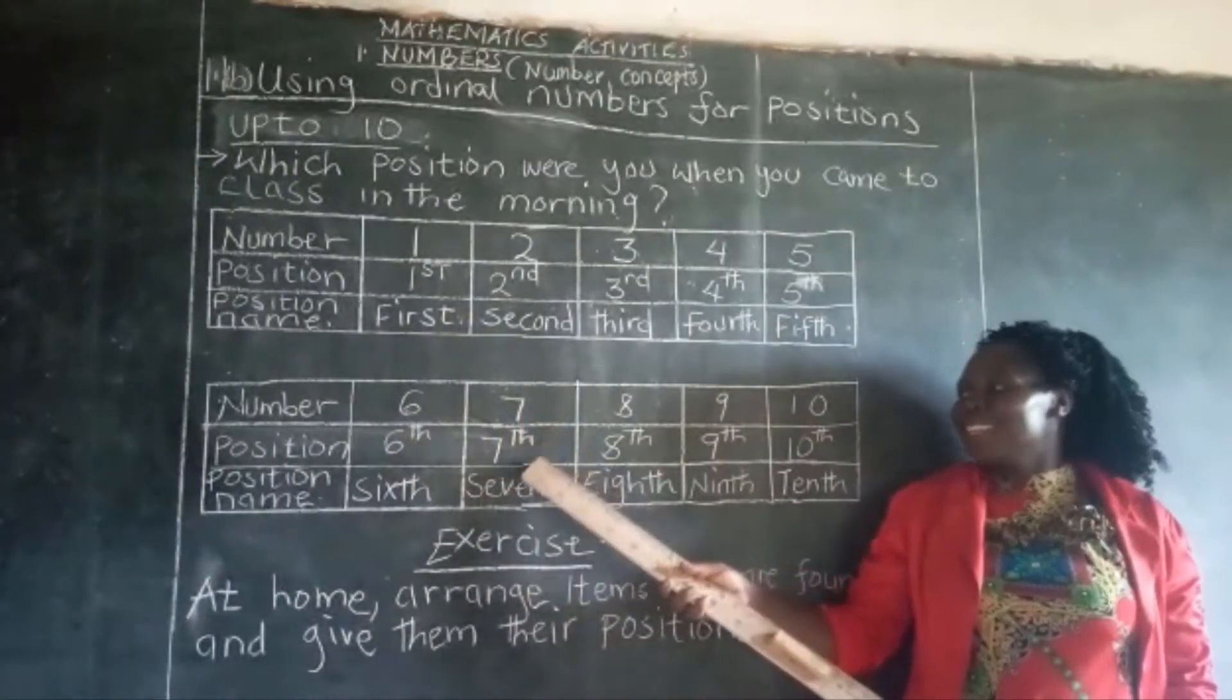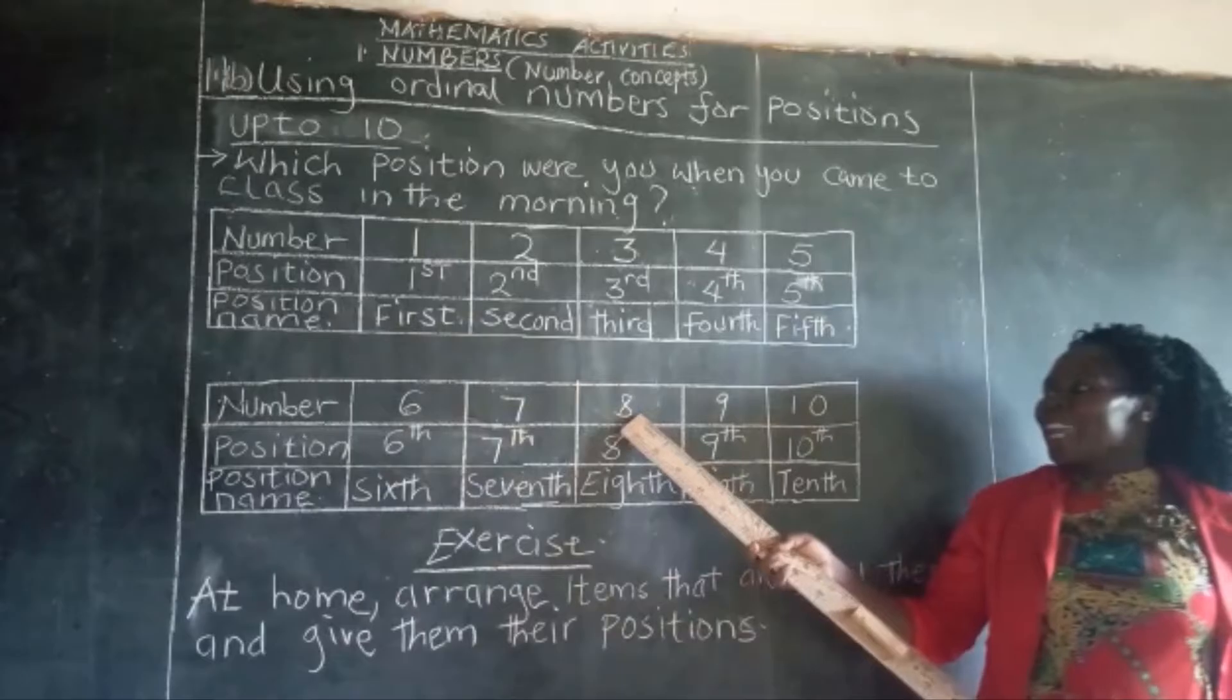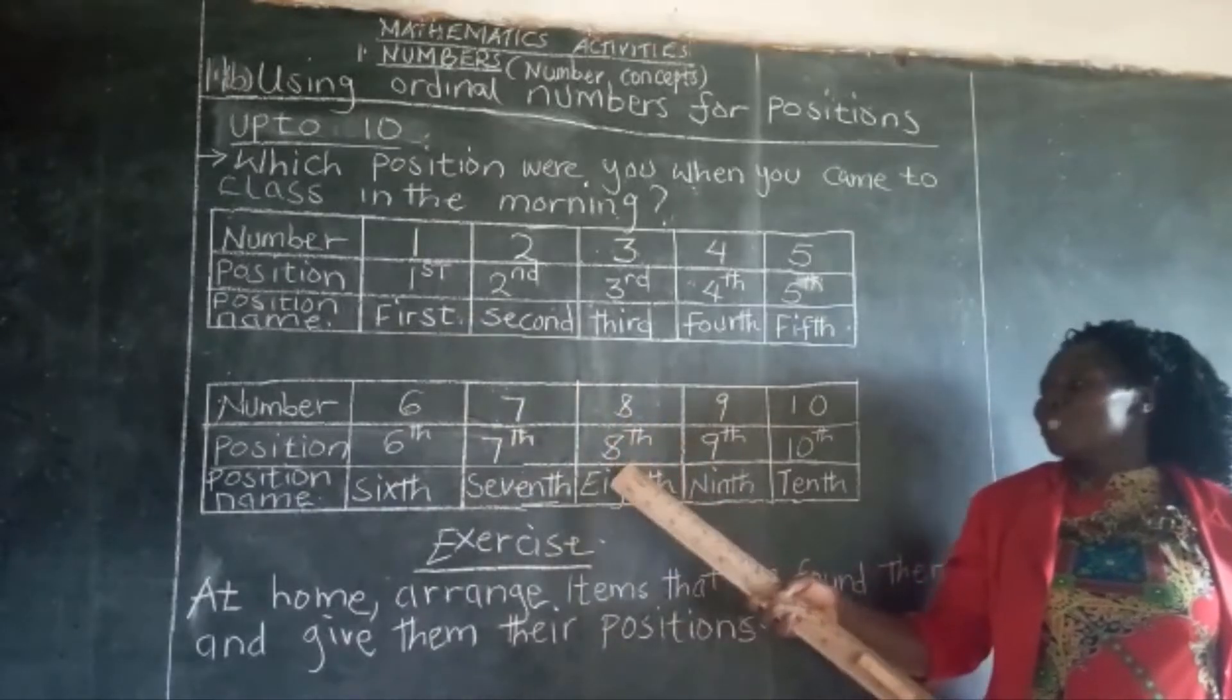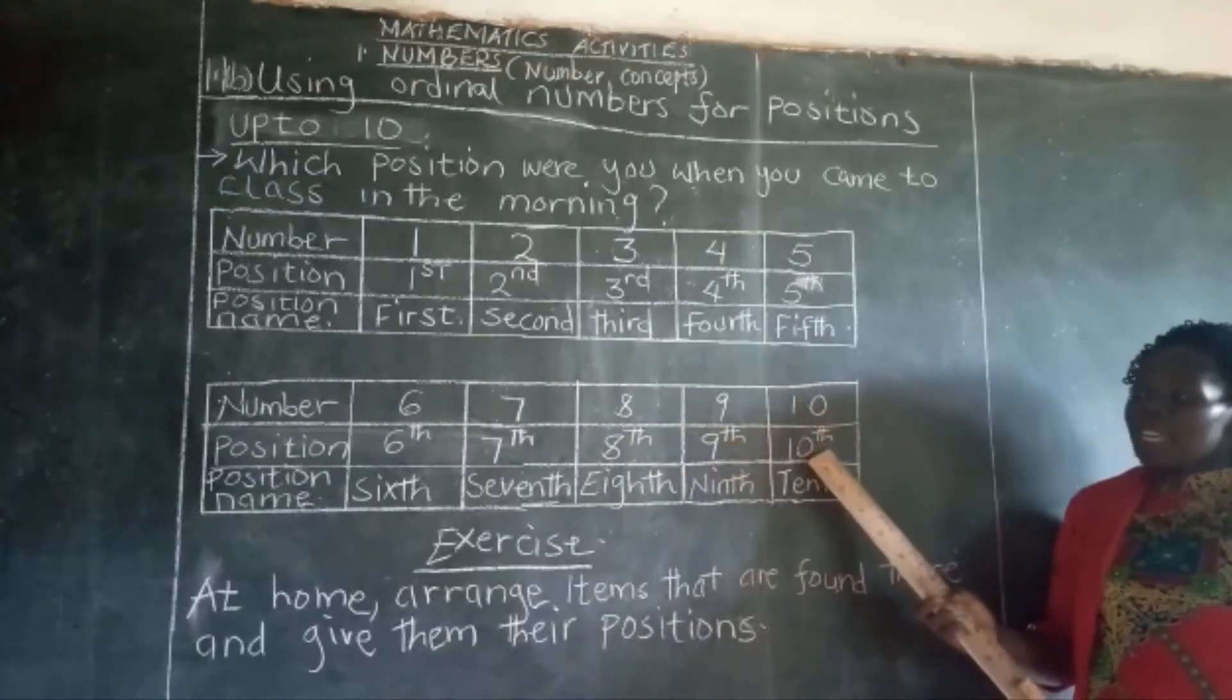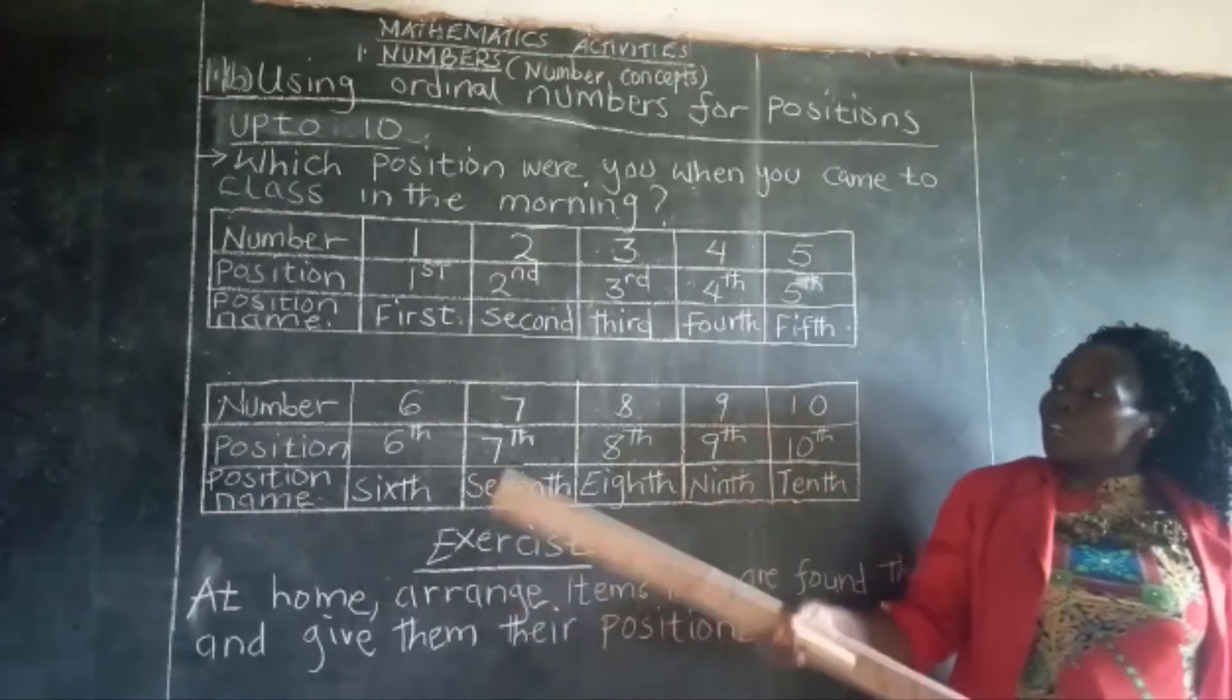Number five is in the fifth position. Number six is in the sixth position. Number seven is in the seventh position. Number eight is the eighth position. Number nine is in the ninth position. And number ten is in the tenth positions.